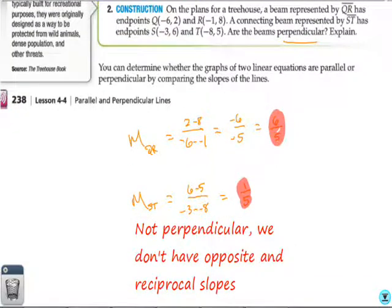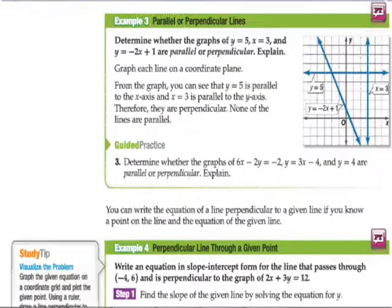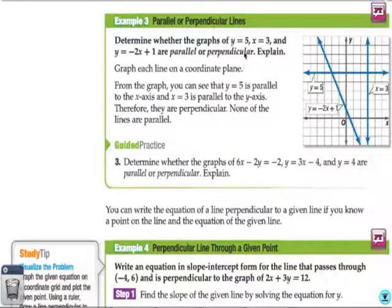Alright. Next question. We're going to determine whether the graphs of Y equals 5, X equals 3, and Y equals negative 2X plus 1 are parallel or perpendicular.